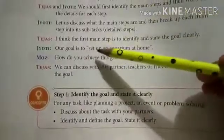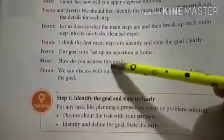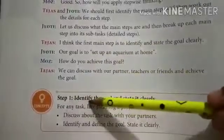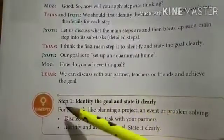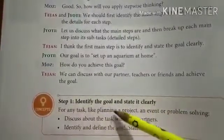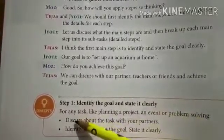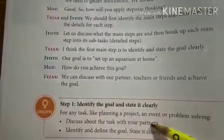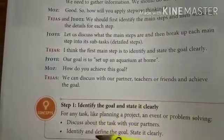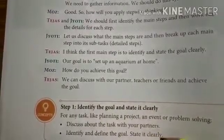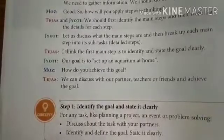Their goal is to set up an aquarium at home. So how do they achieve the goal? Step 1 is: identify the goal and state it clearly. For any task like planning a project, an event, or problem solving, we need to discuss about the task with the parents or partners, then identify and define the goal and state it clearly.